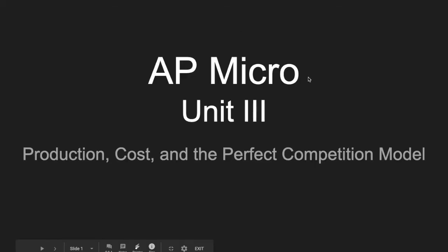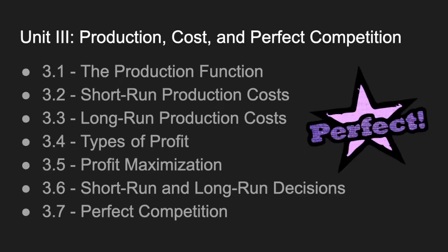Today we're going to start off with just the first couple sections of Unit 3, which gets into short run costs and what we call the production function. Unit 3 covers production, cost, and the perfect competition model. Here's a list of the things we're going to look at from Section 1 to Section 7 in Unit 3.